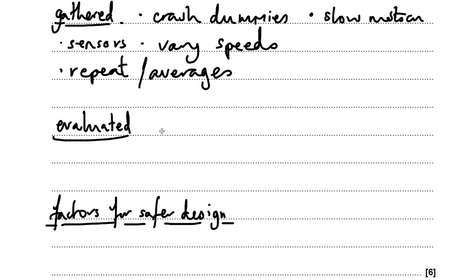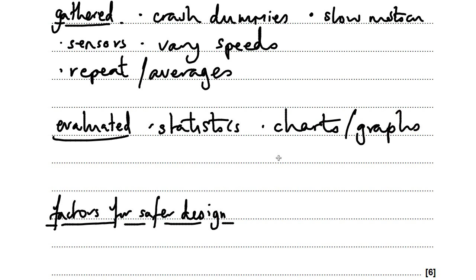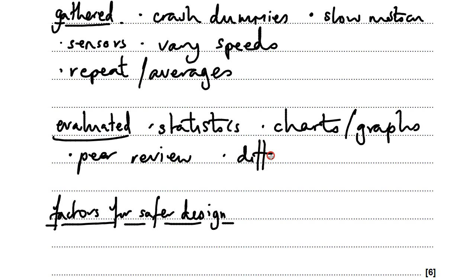How is that data going to be evaluated? Well, they use statistics and they use charts and graphs. But importantly, it goes through a process of what we call peer review. That's a very important idea in science — peer review. Other people actually inspect the science and look for gaps, look for things that could have negated the results or made the results invalid. They use data from different sources — that's about reproducibility — and they make comparisons.